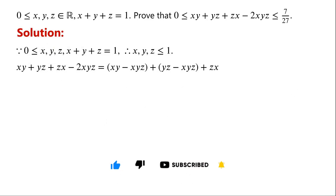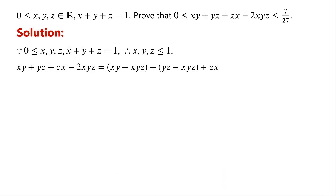The algebraic expression xy plus yz plus zx minus 2xyz can be written as xy minus xyz, plus yz minus xyz, plus zx. The term xy minus xyz can be written as xy times (1 minus z).